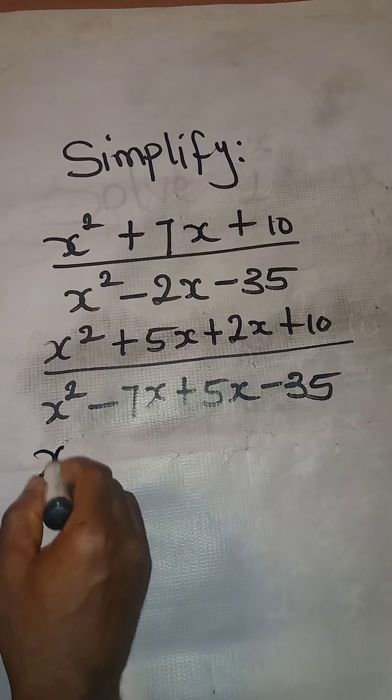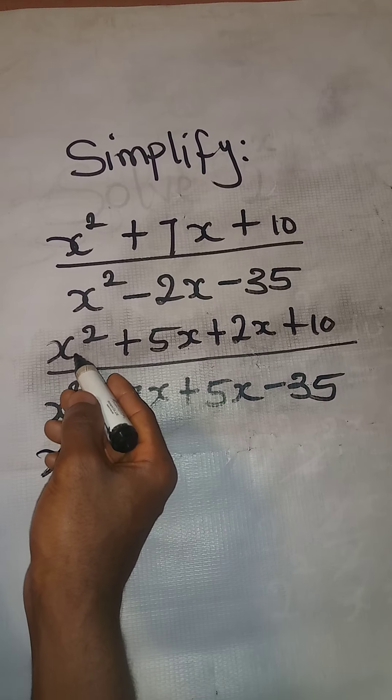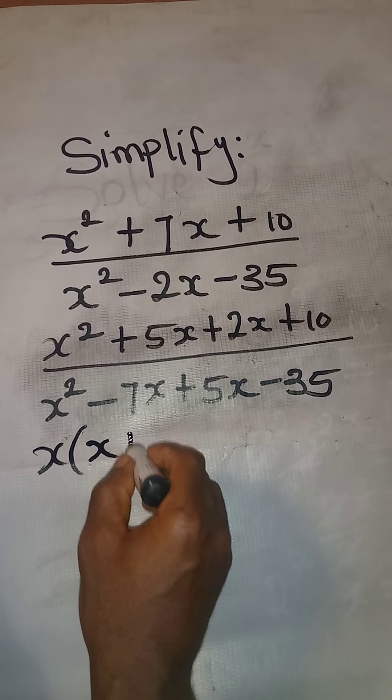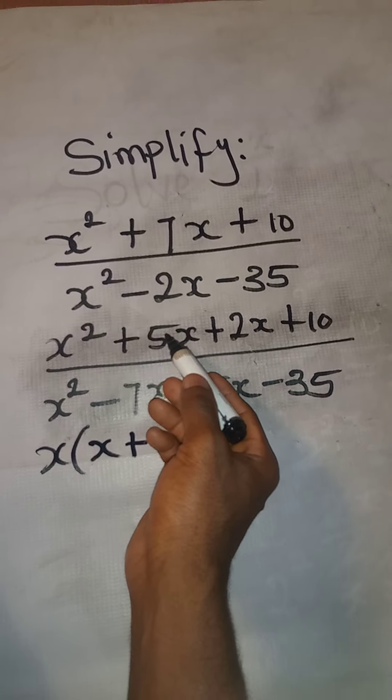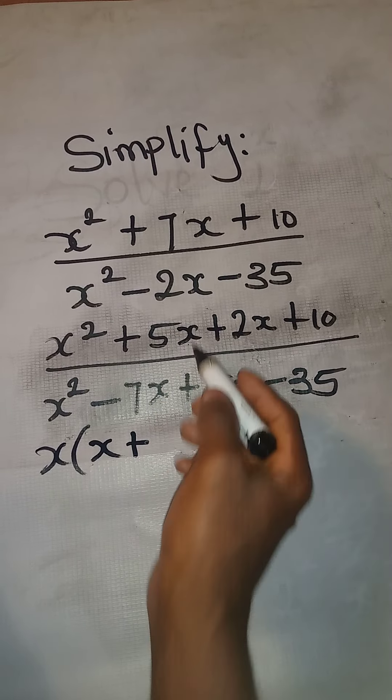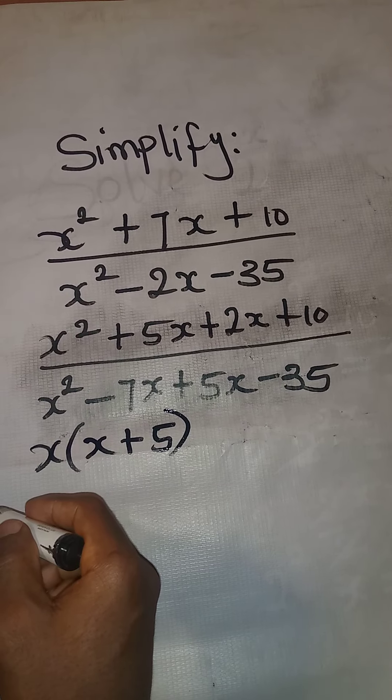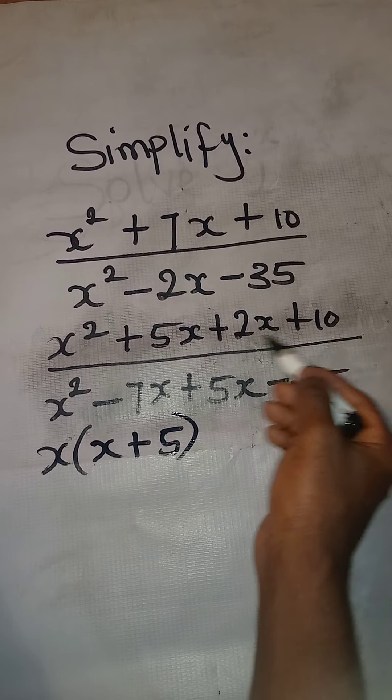If x comes out of this, what will remain will have 1x, then plus. If x comes out of 5x, what do you have? You will have ordinary 5. Close the brackets. Now you're going to open another bracket for this one.